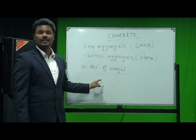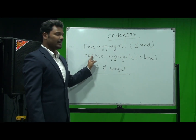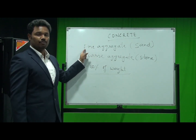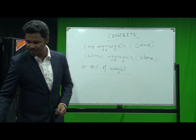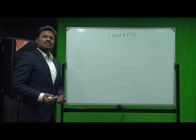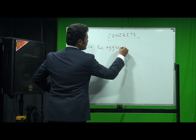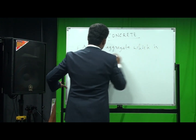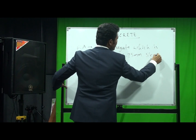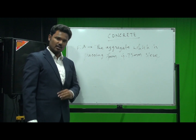Now in this session we'll discuss aggregates. There are two types: fine aggregate and coarse aggregate. Aggregates consist of 70 to 80 percent of concrete's weight. The difference between them is given by their names — fine and coarse. The aggregate which passes through a 4.75 mm sieve is called fine aggregate.